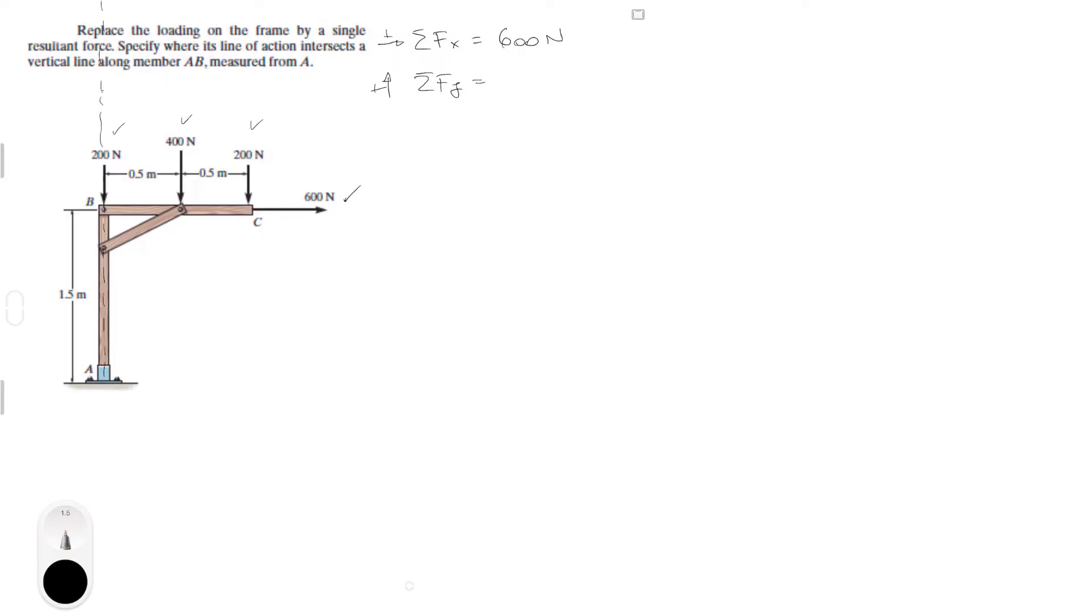So that will be 200 negative minus 400 minus 200 Newtons. All of this is in Newtons. So this is equal to minus 800 Newtons. So you know that the force is equal to 600 in the i minus 800 in the j all in Newtons.